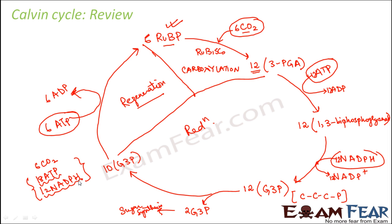That is why there is an additional process called cyclic photophosphorylation to produce additional ATP molecules. Non-cyclic photophosphorylation produces both ATP and NADPH, but cyclic photophosphorylation produces only ATP. Since the amount of ATP needed in the dark reaction is more, the additional requirement of ATP is fulfilled by cyclic photophosphorylation.